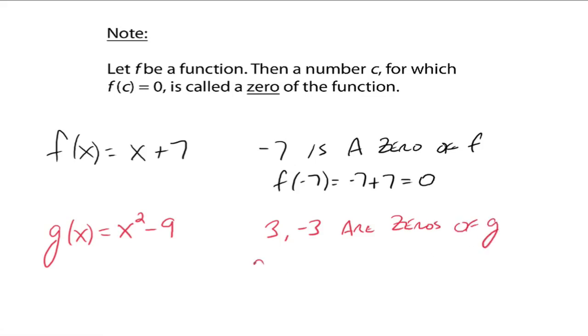Everybody see that? Because g(3) = 0 and g(-3) also equals zero. So both 3 and -3 are called zeros of the function g.